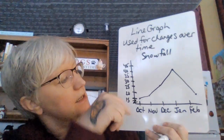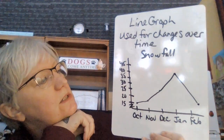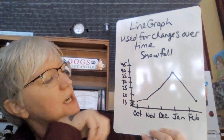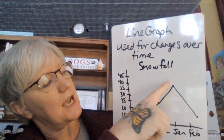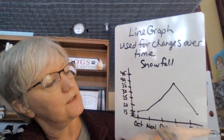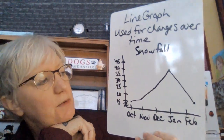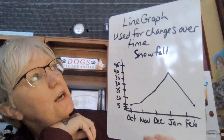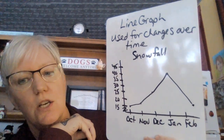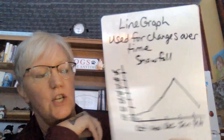You can see that the most amount of snow was in January. It progressively got higher, and then all of a sudden the snowfall just dropped off from January to February. The big point here is that line graphs are used to calculate changes over time.